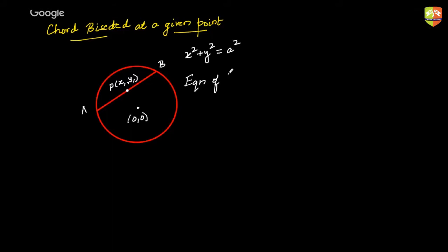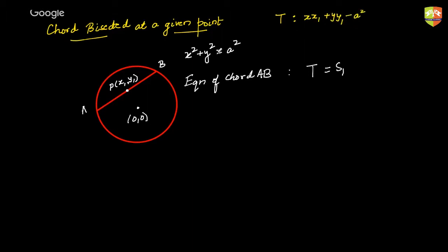The equation of chord AB would be given by the expression T = S₁. T is basically nothing but x·x₁ + y·y₁ − a². This is called the expression T for this circle. If your circle changes to the general form x² + y² + 2gx + 2fy + c = 0, then T becomes x·x₁ + y·y₁ + g(x + x₁) + f(y + y₁) + c. And S₁ is obtained by substituting x₁, y₁ in place of x and y.